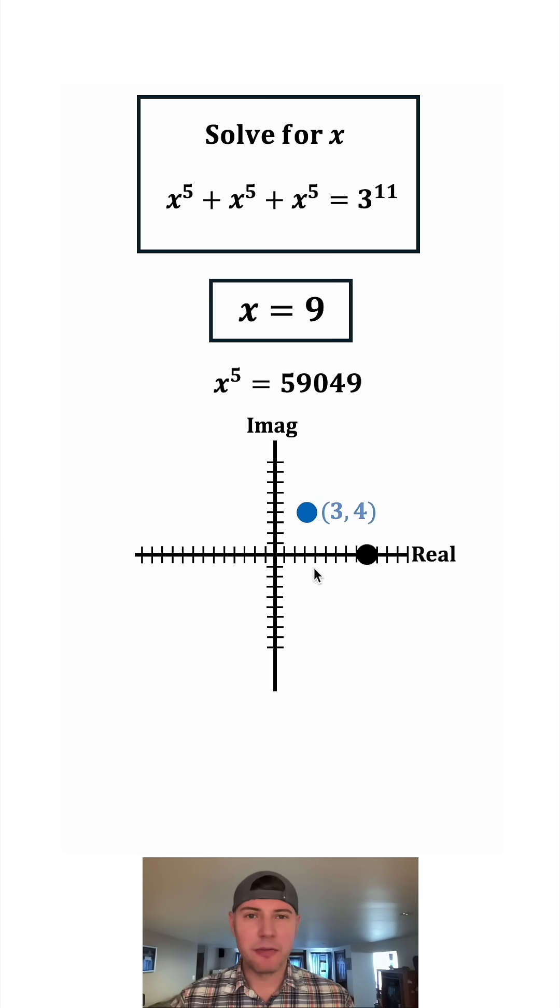This plotted point is located at three four. Or we can write it as a number three plus four i. This is in the a plus bi form we talked about earlier.